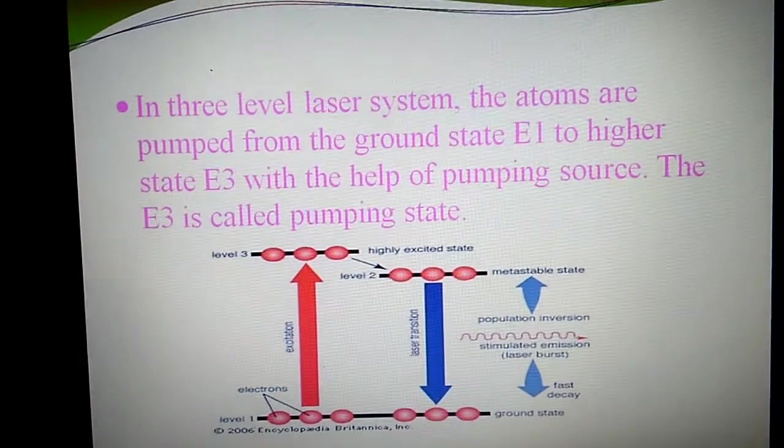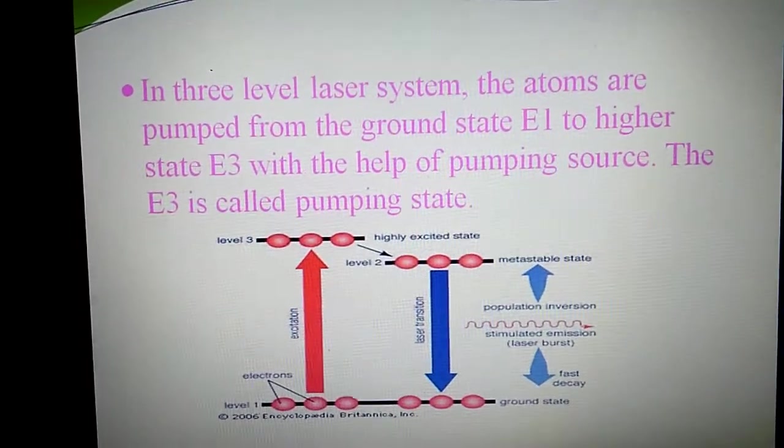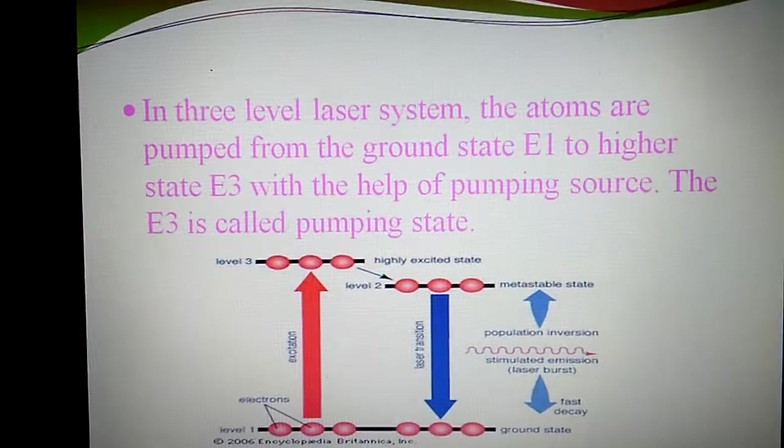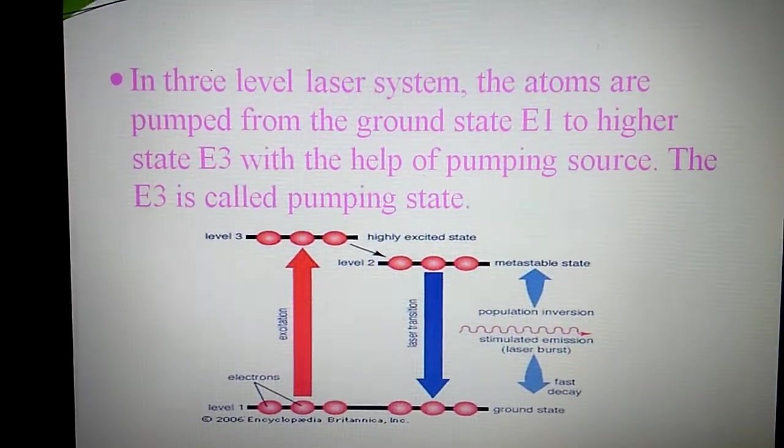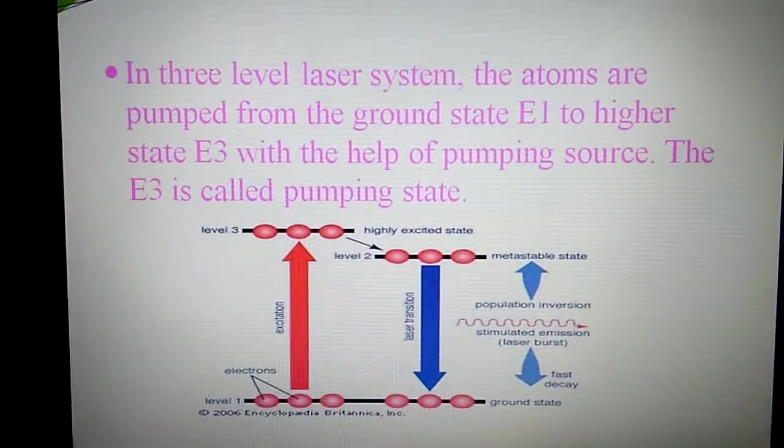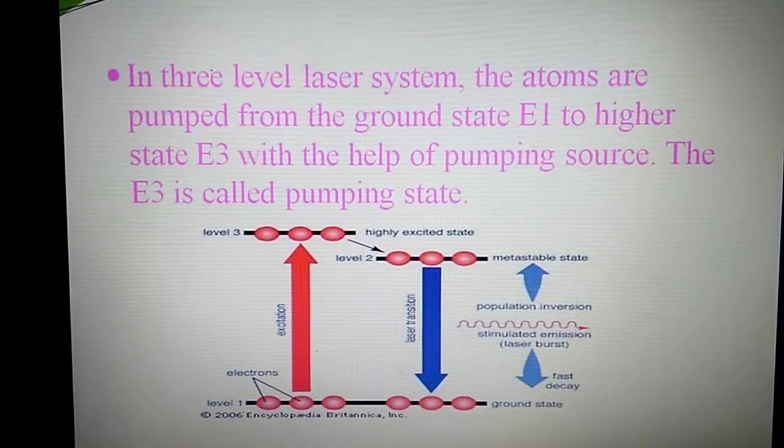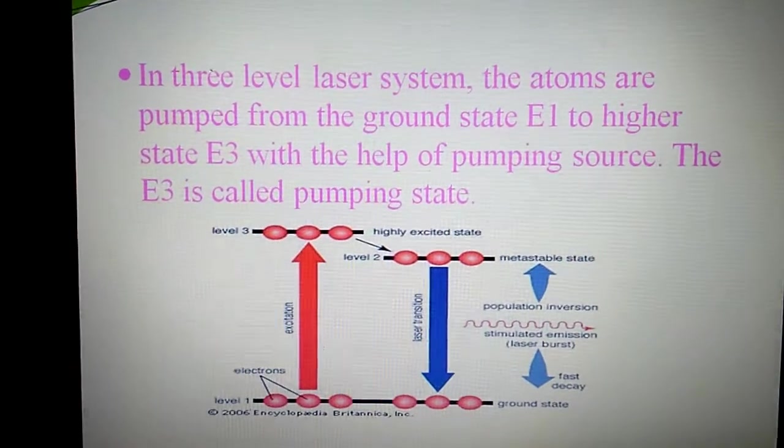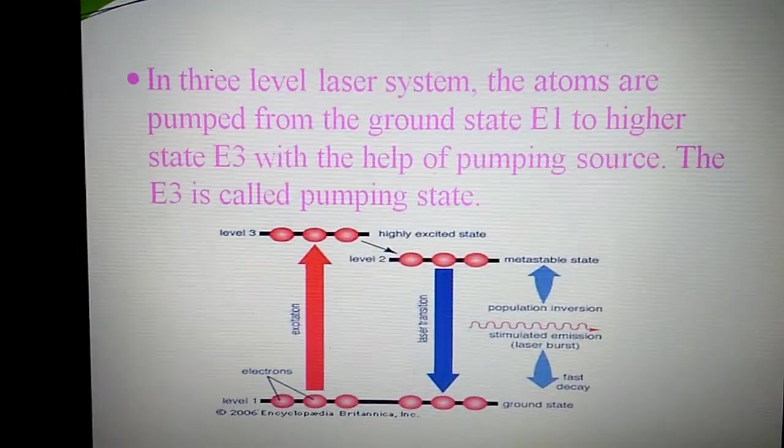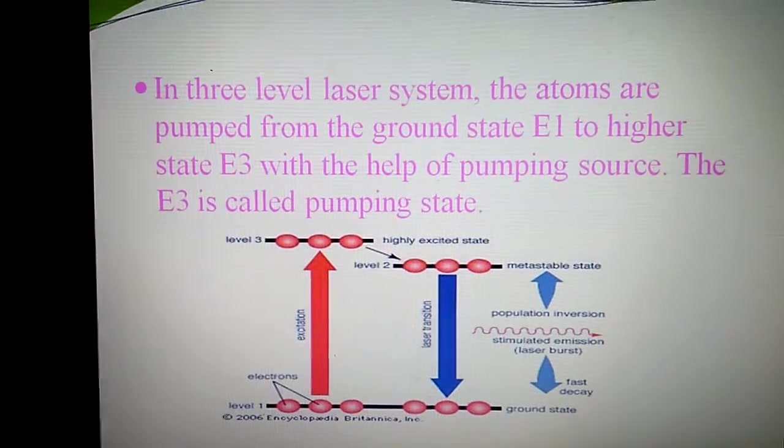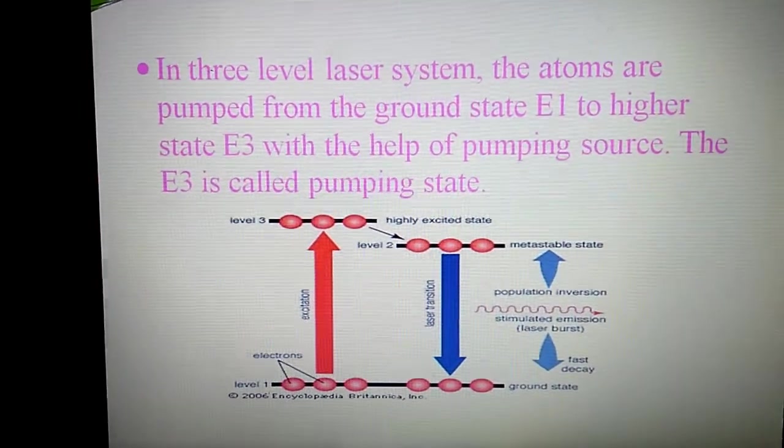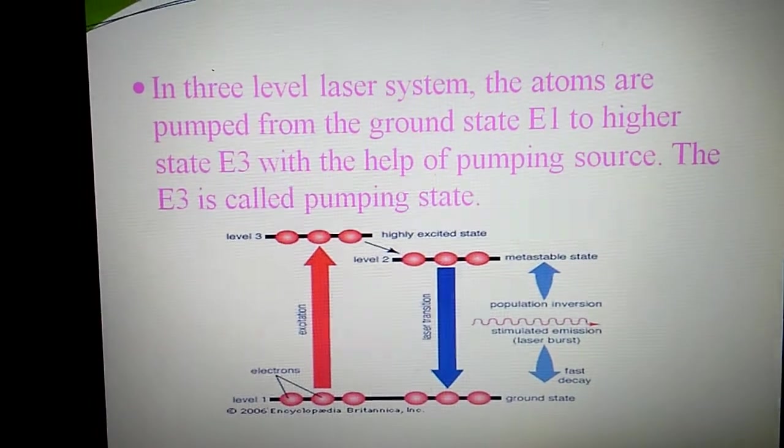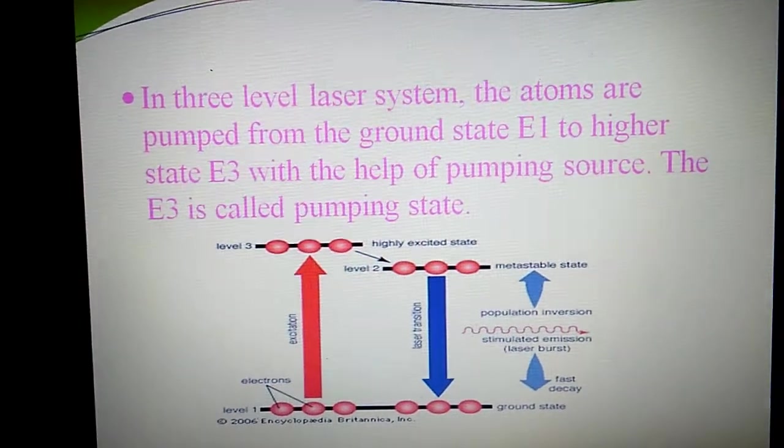In three level pumping, atoms are pumped from ground state E1 to higher state E3 with the help of pumping source. The E3 is called pumping state. As the name suggests, there are three levels involved: E1 is ground state, E2 metastable state, and E3 is pumping state.